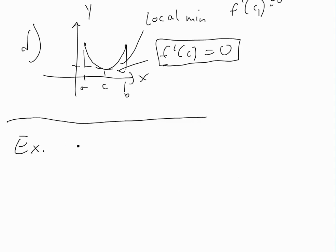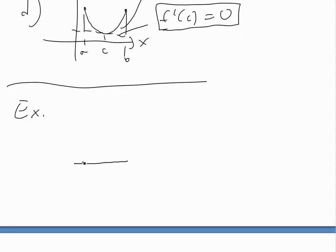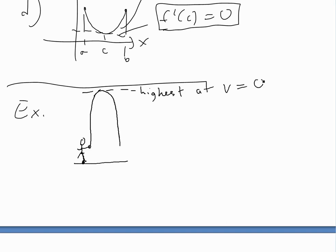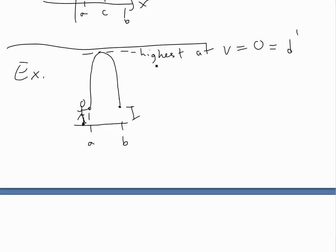To illustrate this, one example is if you throw a ball in the air. If you kick or throw a ball, it's going to go up and land back down. The highest point is when the velocity becomes zero. Velocity equals the derivative of distance, and since the ball lands back at the same height, with a and b at the same level, this is a simple illustration of Rolle's Theorem.